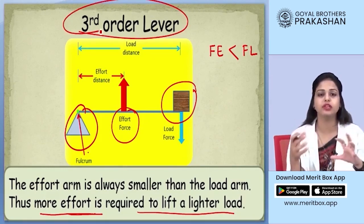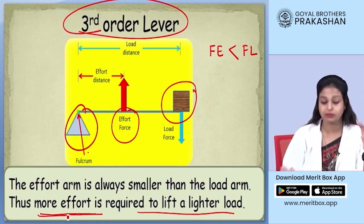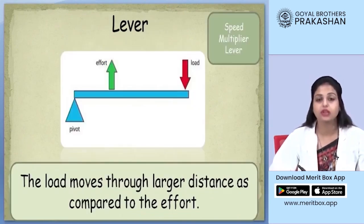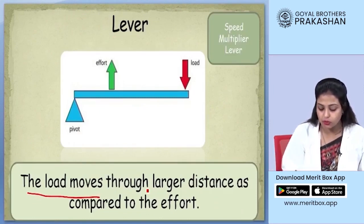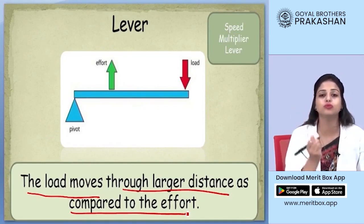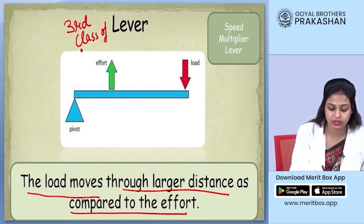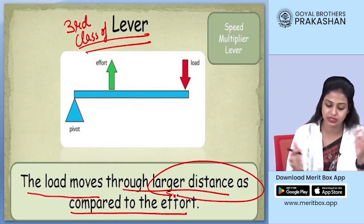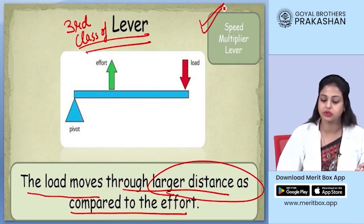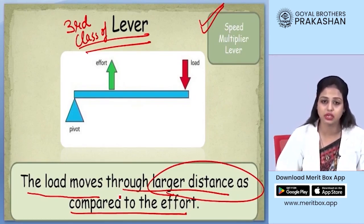Then why would we use a third order lever, since simple machines are meant to make tasks easier? In this case, more effort is required even for a lighter load. However, a third order lever is still used because the load moves through a larger distance compared to the effort. Whenever you need to move the load to a larger distance or increase speed, you use a third class lever. These levers are therefore also called speed multiplier levers.